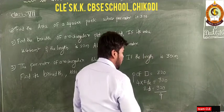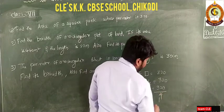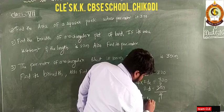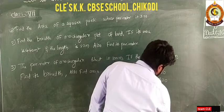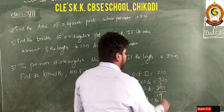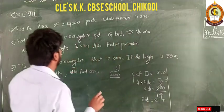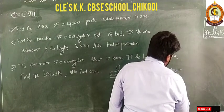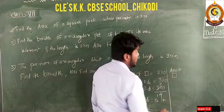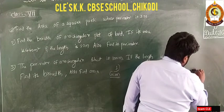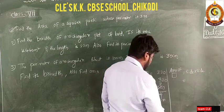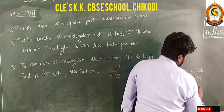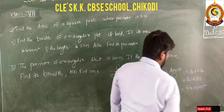So side equals 80 meters. Now they asked us to calculate the area of the square. Area of square equals side into side, which is 80 into 80. Eight eights are 64, so with two zeros that gives us 6400 meter square.